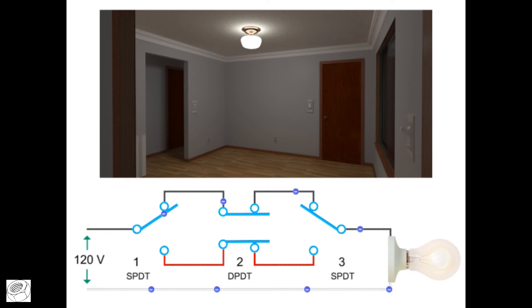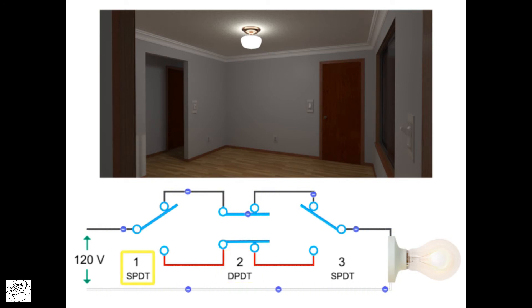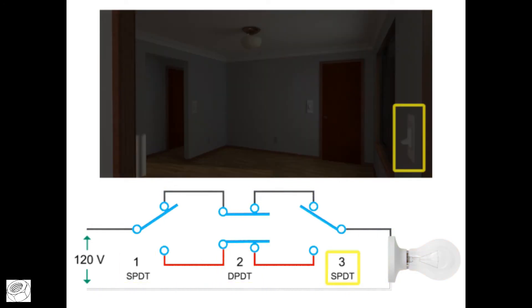If the position of switch two remains unchanged and switch one is up while switch three is down, the circuit will be broken and current will not flow through the circuit to light the bulb.